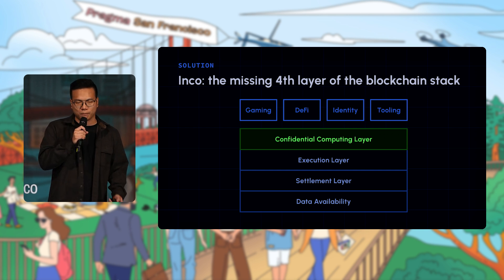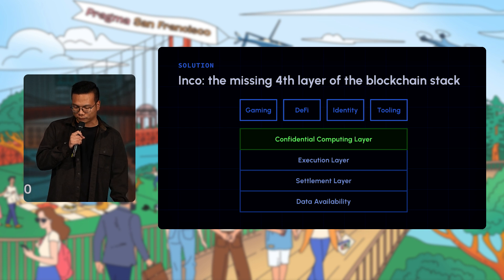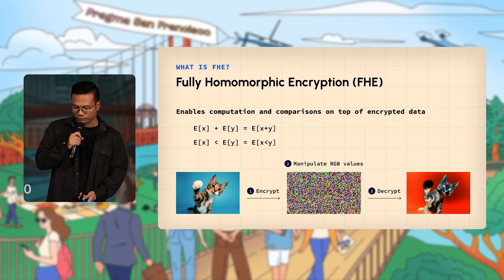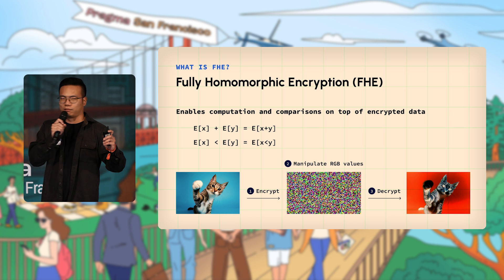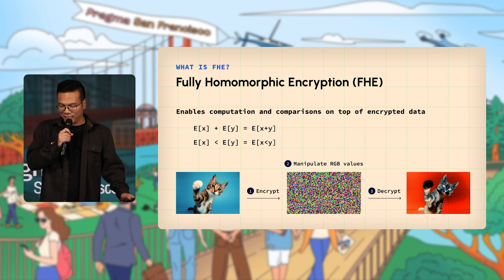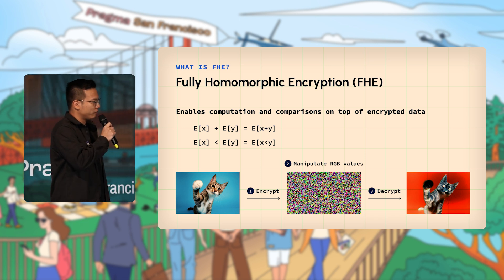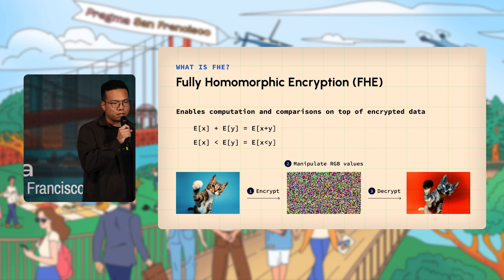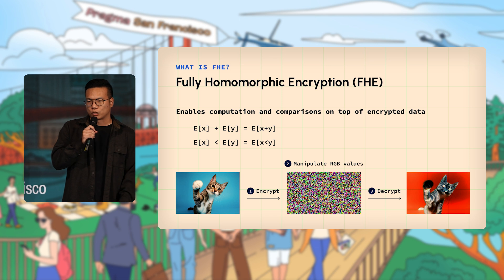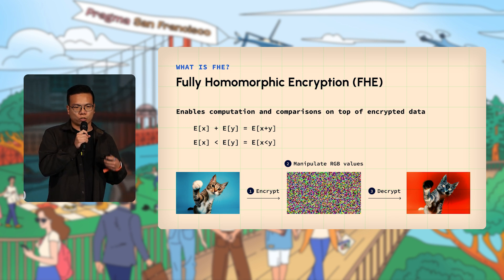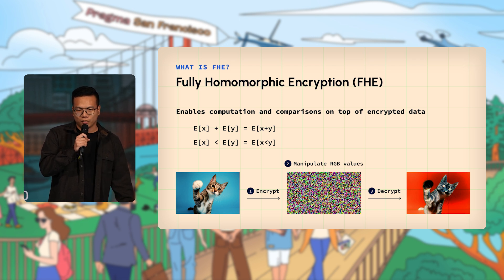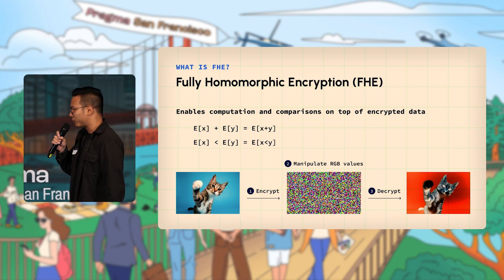Confidentiality is a missing layer and missing stack that's quite crucial for practical adoption. For folks who have never heard of FHE, it's a very different cryptography than ZK. What it does — and does very well — is encryption but also compute on top of encrypted data.